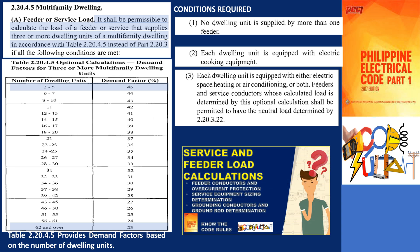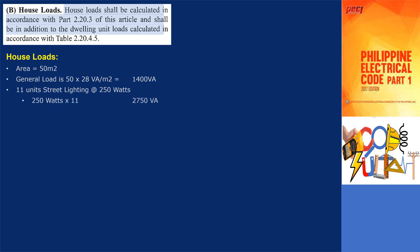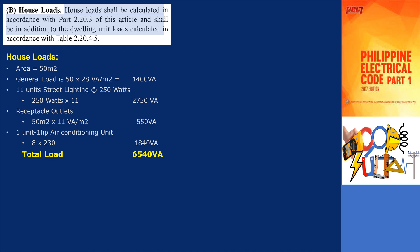Since our sample project meets the conditions, and load and feeder conductors and protection have been determined in previous videos, we now address the administration and common area loads. In subsection 2.20.4.5b, house loads shall be calculated in accordance with part 2.20.3 of this article and shall be in addition to the dwelling unit loads calculated in accordance with table 2.20.4.5. For our sample project, with an effective area of 50 square meters, the general lighting load for offices is 28 volt amperes per square meter, giving 1,400 volt amperes. With 11 pole-mounted street lights at 250 watts, the load is 2,750 volt amperes. Receptacle outlets at 11 volt amperes per square meter give 550 volt amperes, and the 1-horsepower air conditioning unit at 8 amperes gives 1,840 volt amperes. Therefore, the total house load to be added is 6,540 volt amperes.